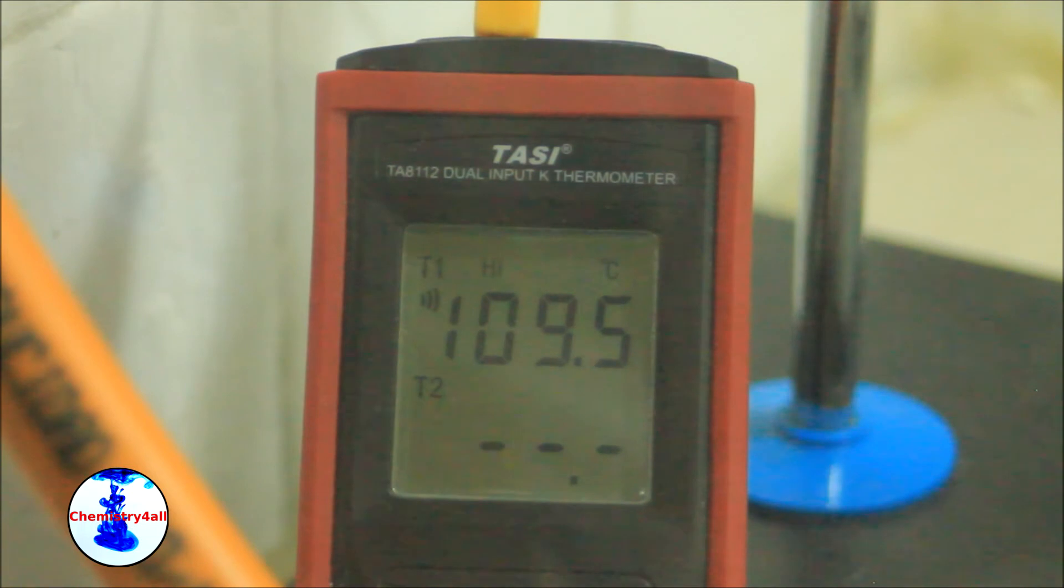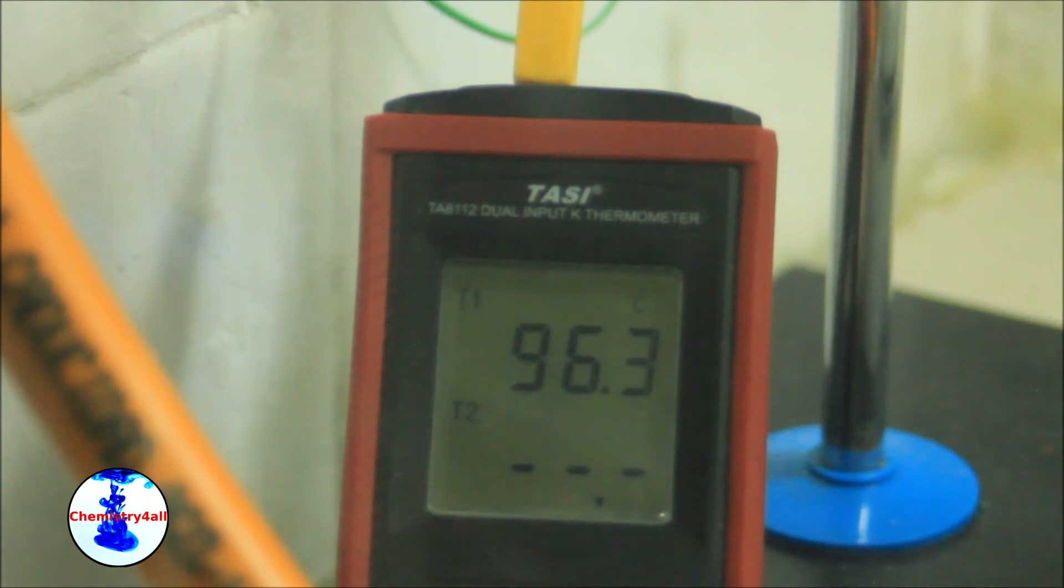After a while the temperature seems to keep constant at about 109.6 degrees. The standard boiling point of toluene is 111 Celsius degrees, this is within the error of the thermocouple. In addition to this, the pressure of the lab is not exactly 1 atmosphere, so that the boiling point differs from the standard one.